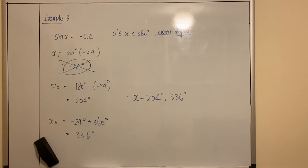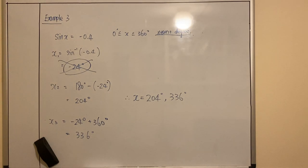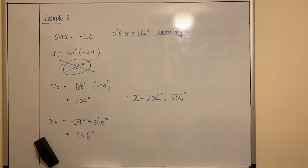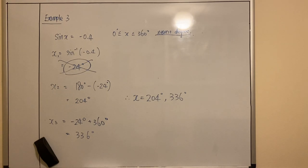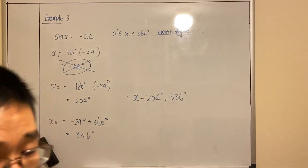Those are the three examples — basic trig equation solving. As you can see, I haven't touched anything about compound angles, and it will get harder if we have more than one trig ratio in the equation. If you follow those four steps, you should be able to work out the answer quite easily. In the next lesson, I'm going to teach you how to solve trig equations with compound angles and with more than one trig ratio. Thank you, see you next lesson.